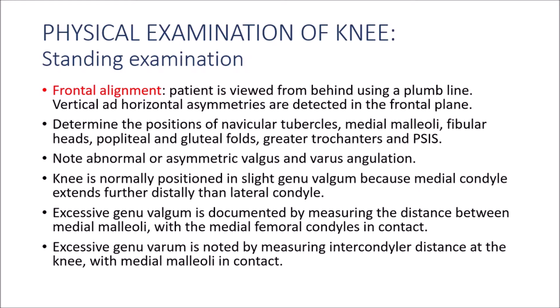The patient is viewed from behind using a plumb line that bisects the heels, and vertical and horizontal asymmetries are noted in the frontal plane. We have to look for the positions of the tibial tubercles, medial malleoli, fibular heights, popliteal and gluteal folds, greater trochanter, and the posterior superior iliac spine as well as the iliac crests. Note abnormal or asymmetric valgus and varus angulation in a standing examination.